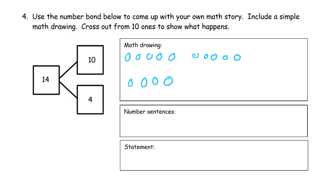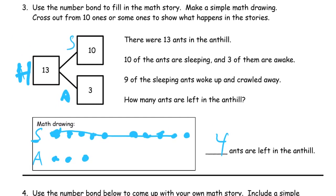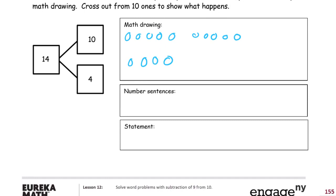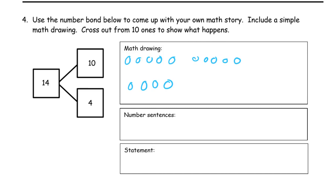Our number sentences. If we're going to subtract nine in our story, which we don't have to, but that's what we've been doing so far. 14 minus nine equals this four plus one more, which is five. The statement - you're going to have to figure out the statement is going to have to go along with your story. I can't tell you what the statement is because you have to make up your own math story.